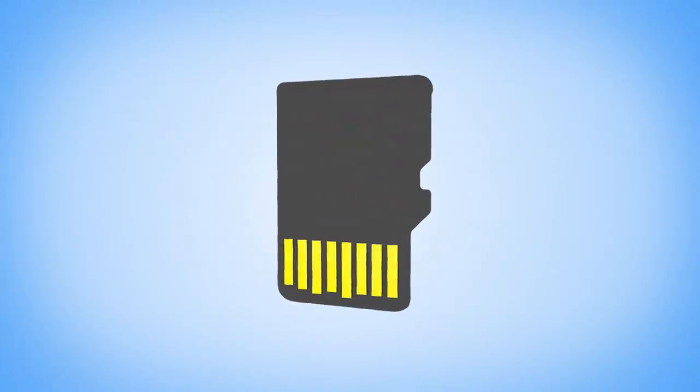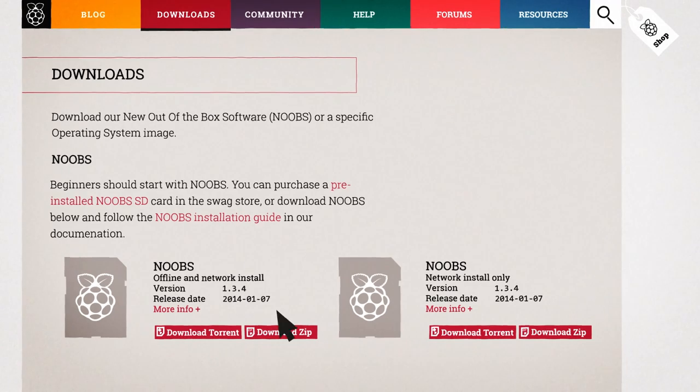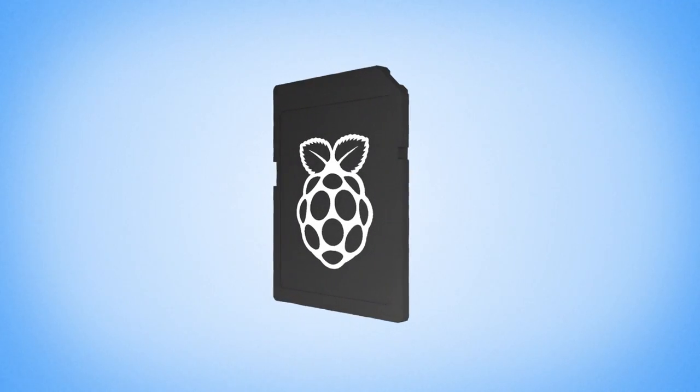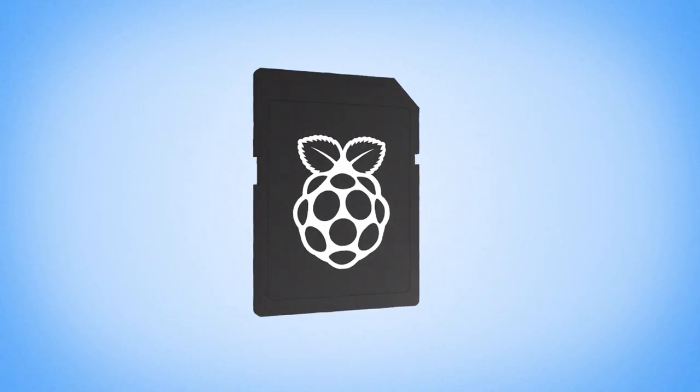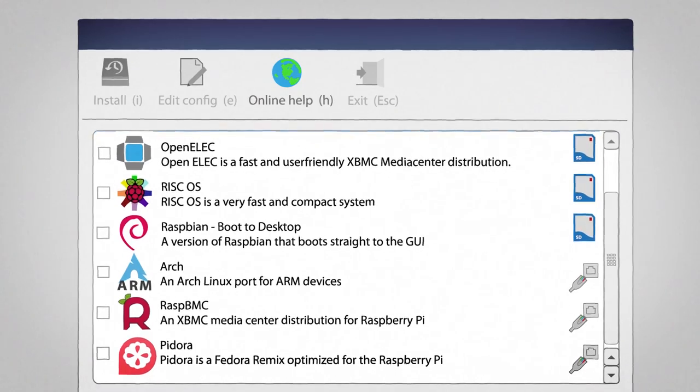The operating system runs from a micro SD card, just like the one in your digital camera. You can download your operating system for free from the Raspberry Pi website. If you want to get started even quicker, you can buy a Noobs card, which comes preloaded with a choice of operating systems for everyone, from beginners to experts.